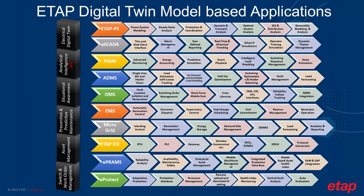The electrical system may require different modules depending on the type of system and the size of the utility. So ETAP is a modular solution that can be sized and customized to the system being implemented. We start from power system analysis, providing power system modeling, steady state, protection, coordination, dynamics, and transients, optimal system analysis, GIS, and distribution analysis.